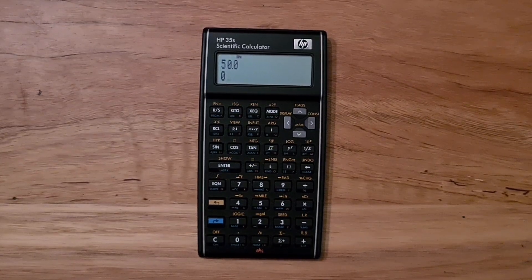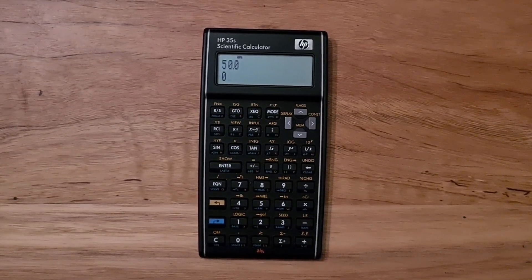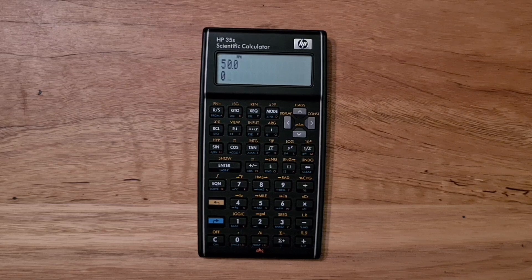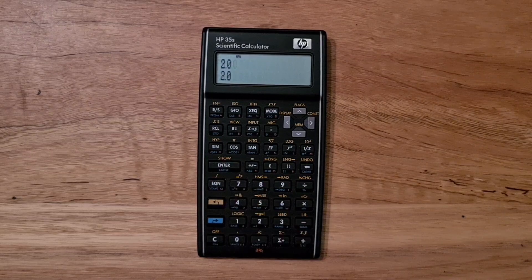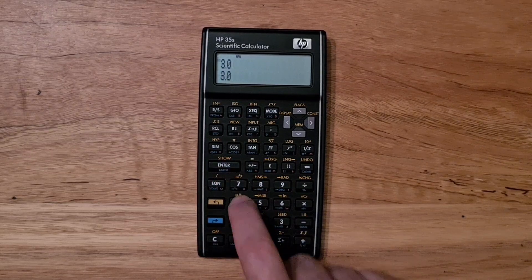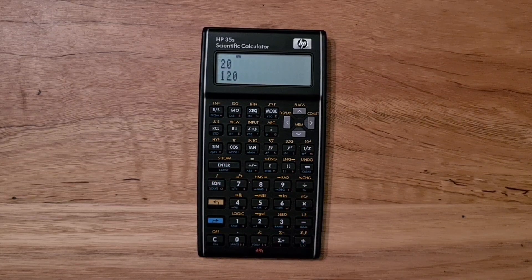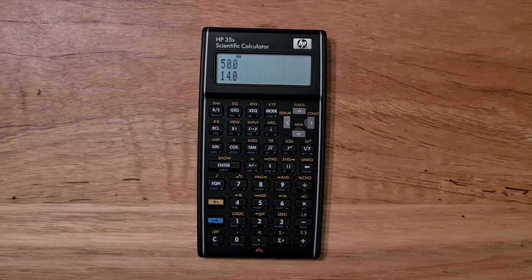The basic operation of the 35S is reverse polish notation, or RPN. So to calculate 2 plus 3 times 4, you type those numbers onto the stack, and then hit multiply and plus to get your answer.